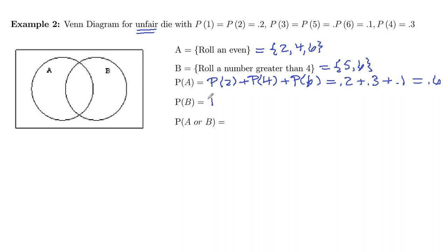B, this is going to be the probability of the sample point five plus the probability of the sample point six. So five and six both had probability of point one, so this is point one plus point one, point two. So 20% chance of rolling B.